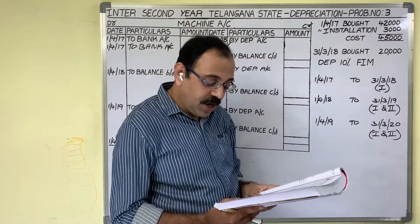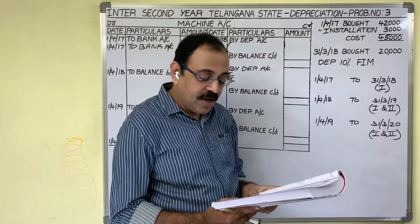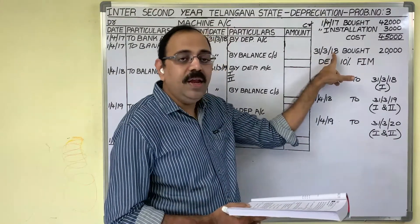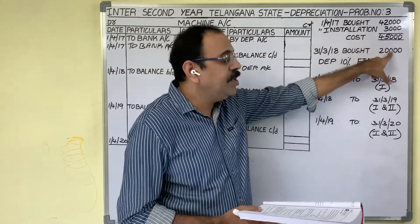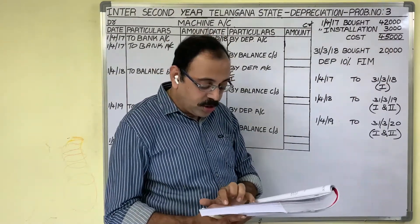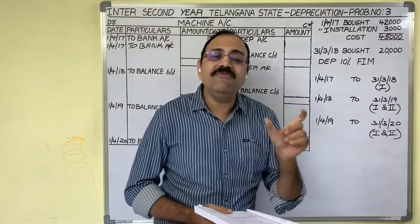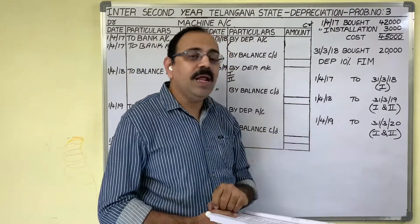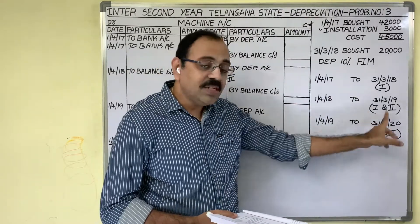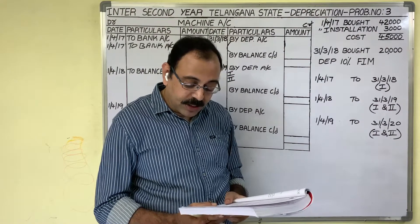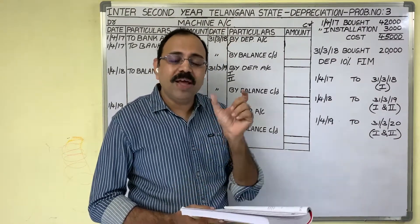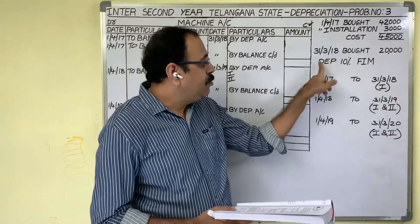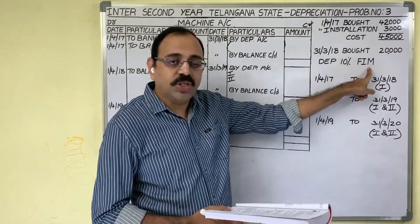Additions are made to the machine on 31st March 2018 for 20,000 rupees — this is the new point in the third problem. On 31st March 2018 the firm purchased another machine for 20,000 rupees. Accounts are closed at the end of the financial year, so the starting date is 1st April and the year ends on 31st March. Depreciation is allowed at 10% under the fixed installment method.